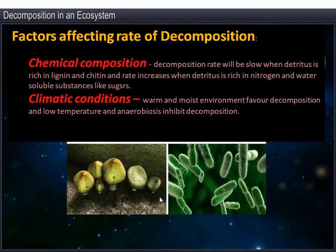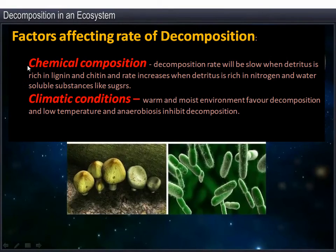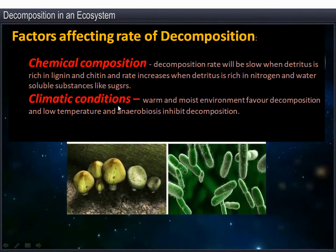Various factors affect the rate of decomposition. One is the chemical composition of the detritus — decomposition rate will be slow when detritus is rich in lignin and chitin, and rate increases when detritus is rich in nitrogen and water-soluble substances like sugars. Climatic condition is also one of the important factors affecting the rate of decomposition.